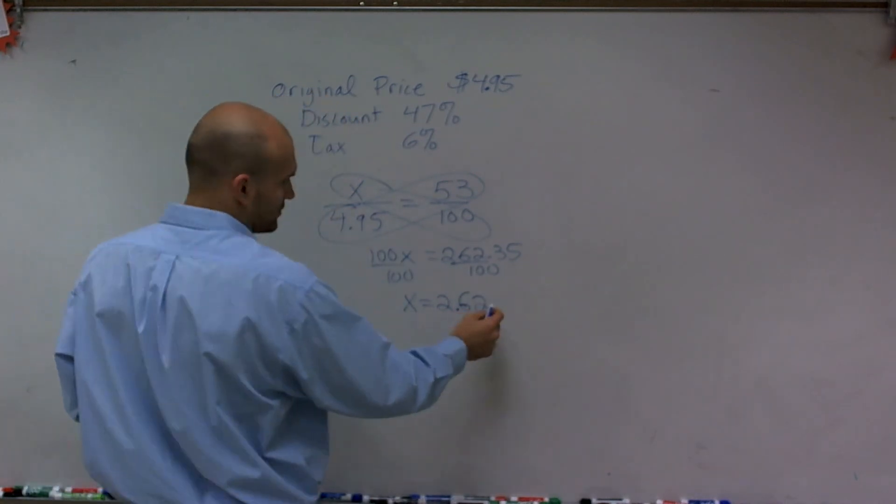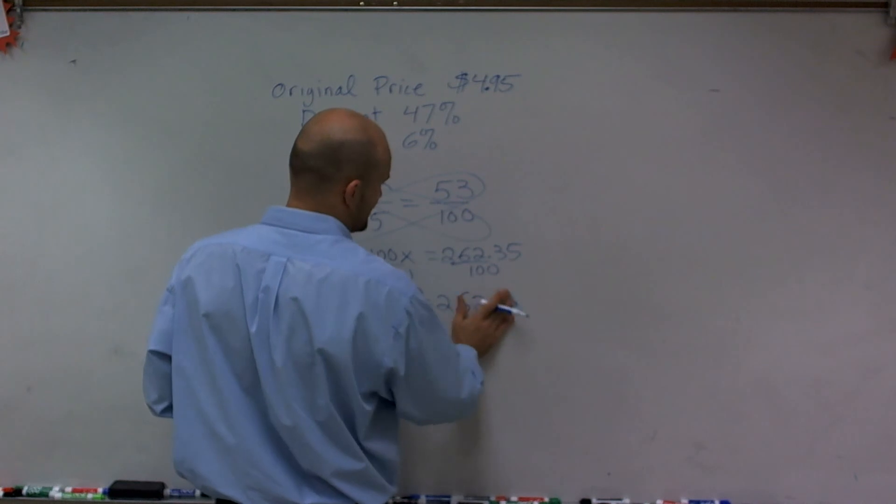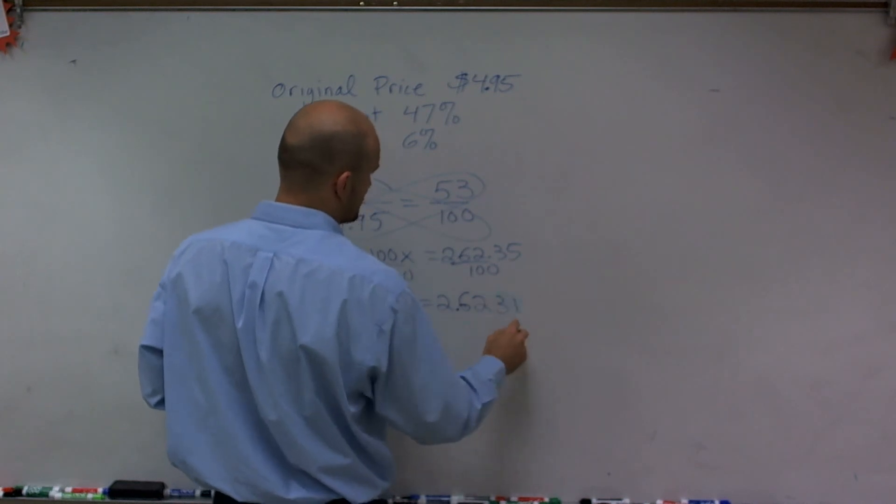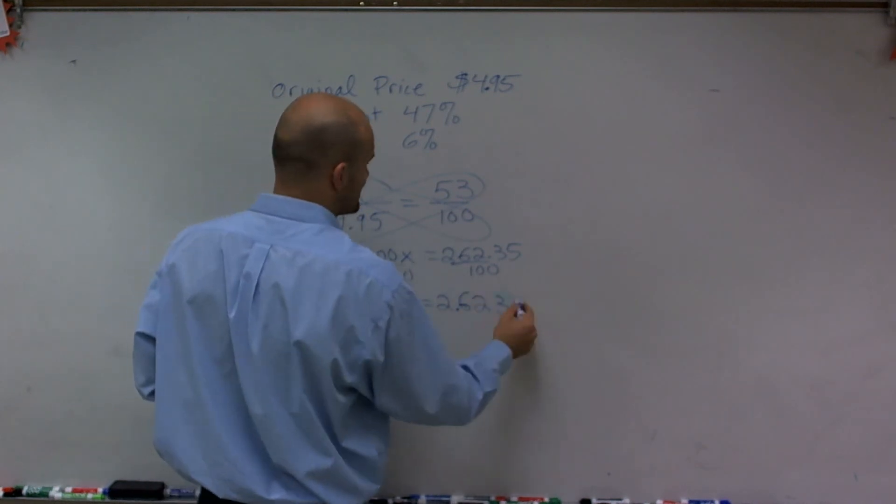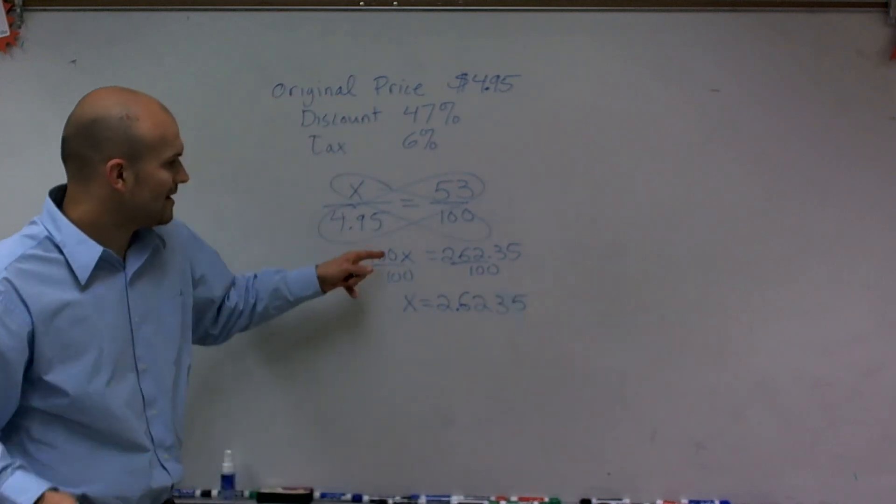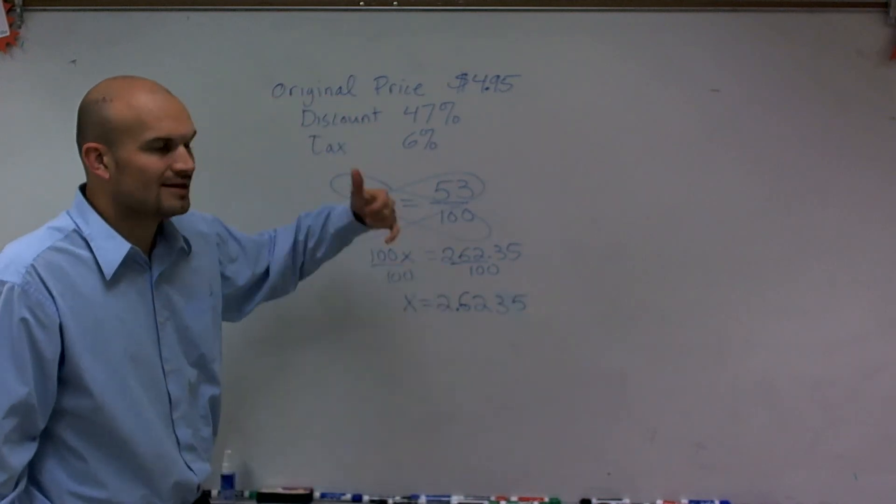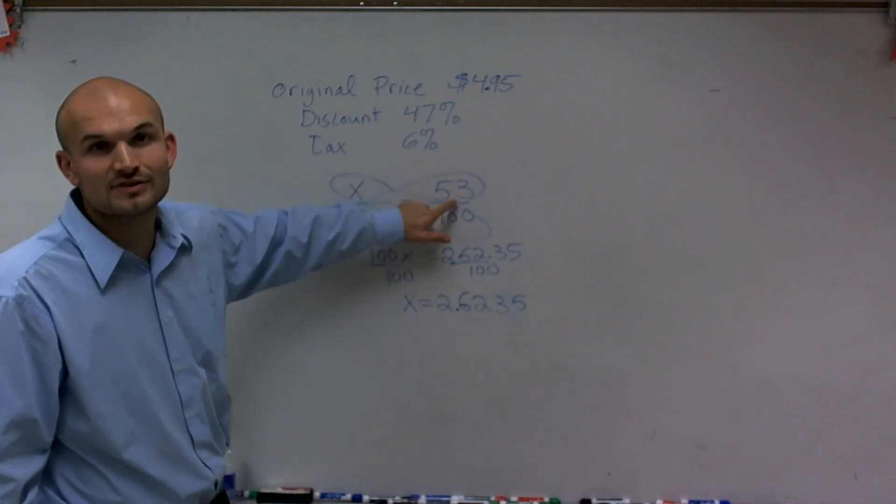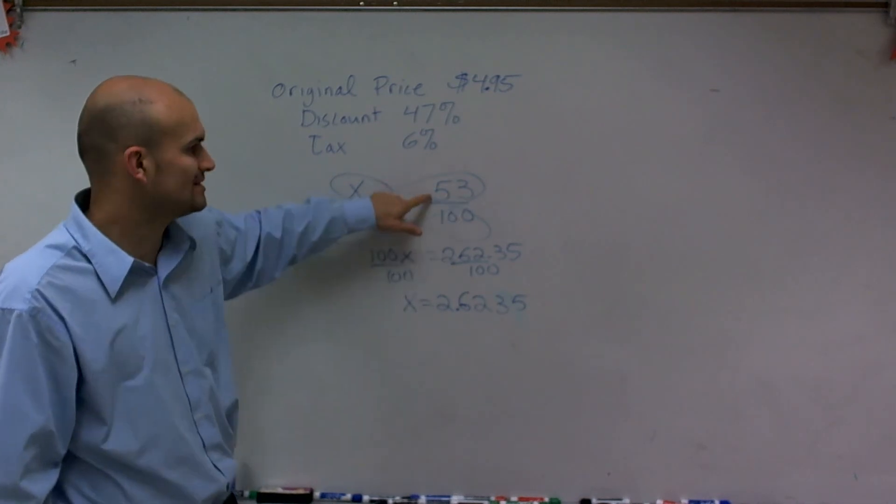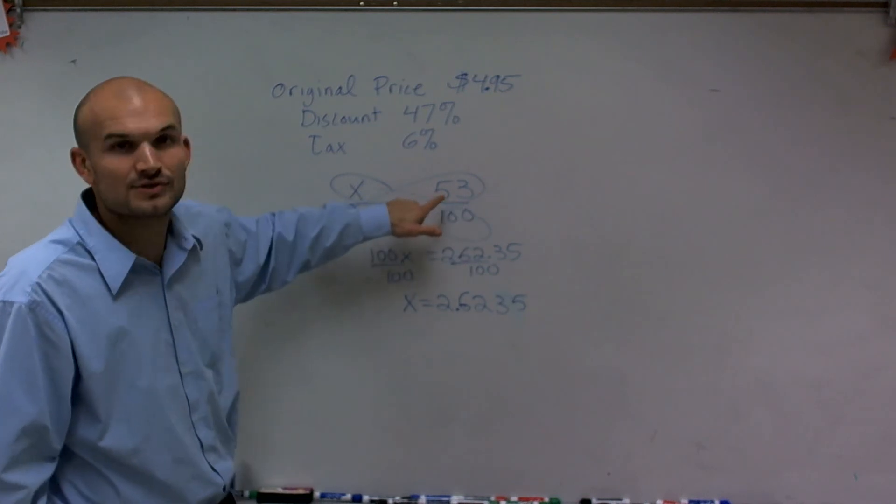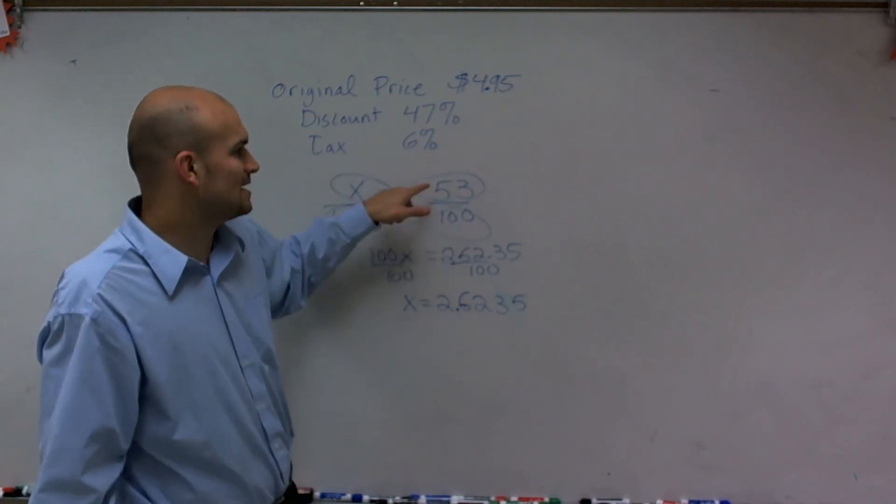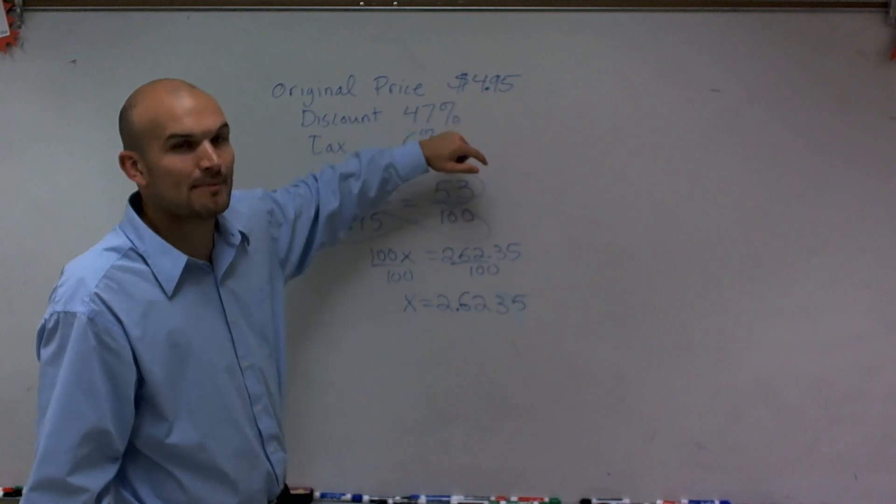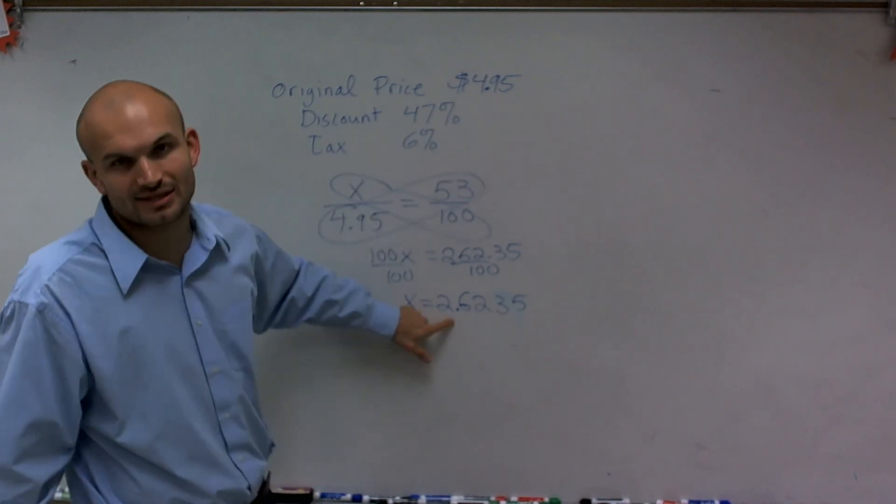We're going to actually keep these decimals as we round. But the one thing I want you to notice is, see how I multiplied then divided by 100? A quicker way to do this is to convert this to a decimal - move this over by two decimal places. You could simply just take .53 and multiply it by 4.95 and you'd get this exact same answer.